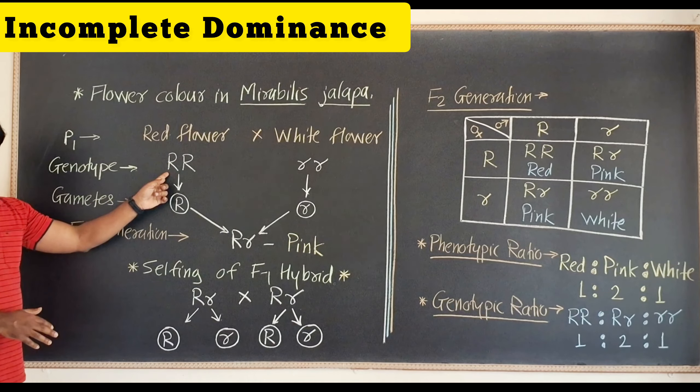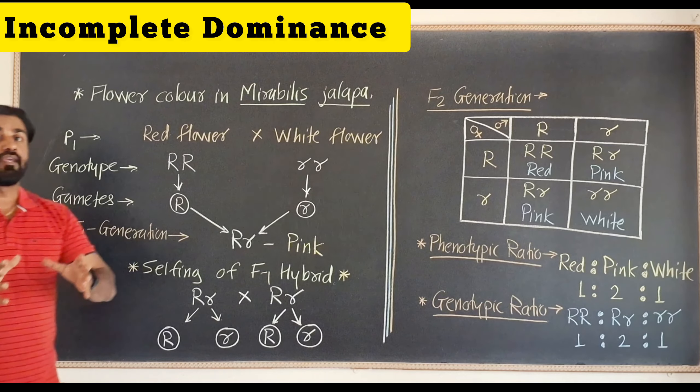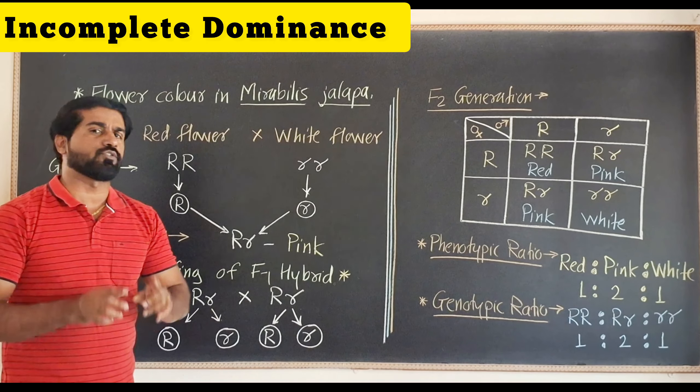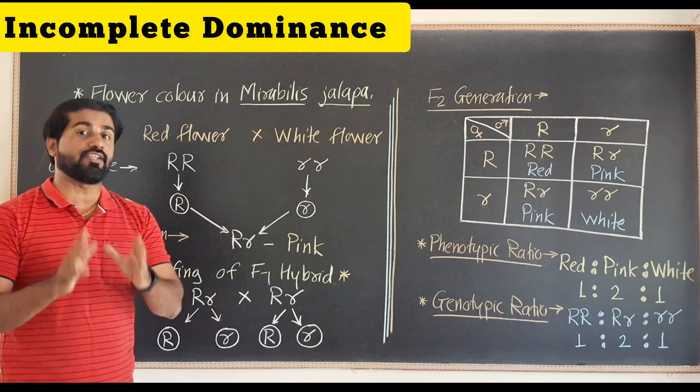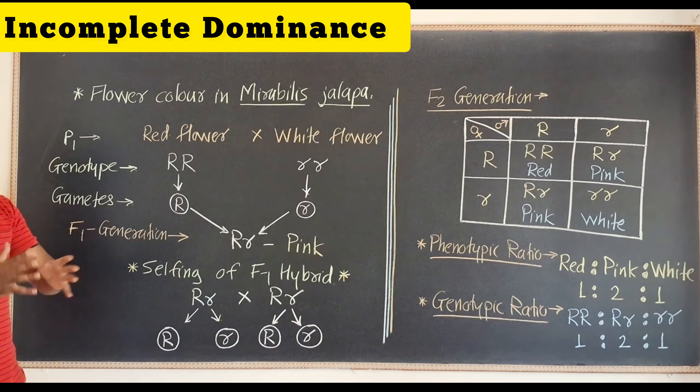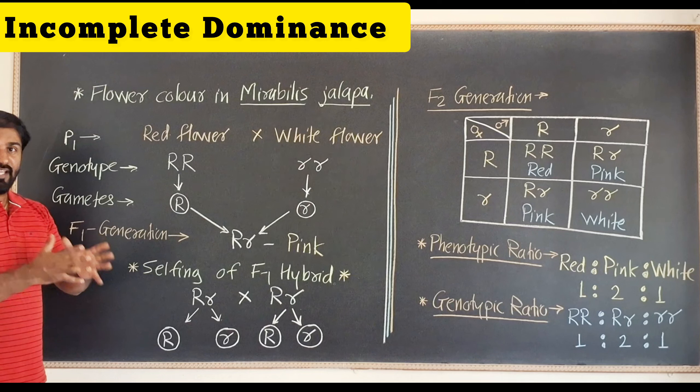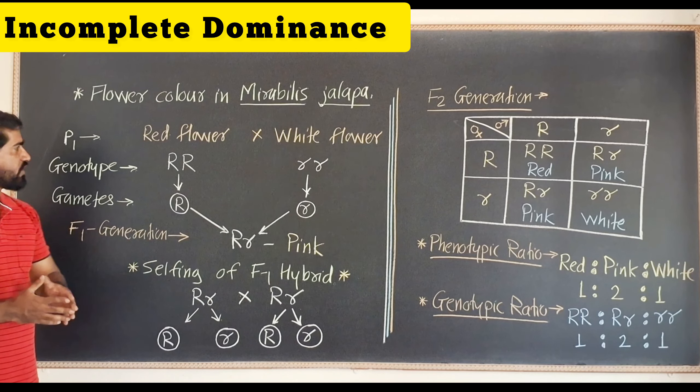Normally red is dominant, white is recessive, but in case of incomplete dominance no one is dominant and no one is recessive. Let us check out what is going to express in F1 and F2 generation.